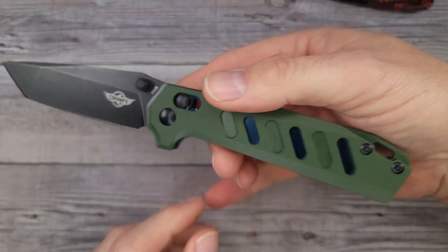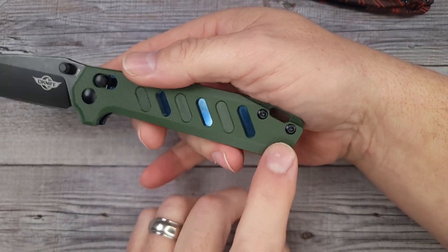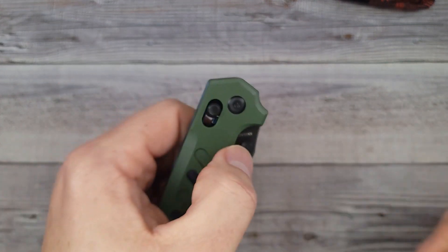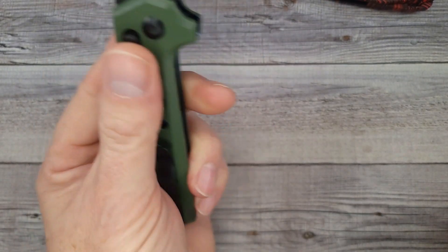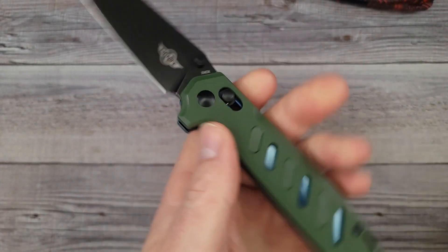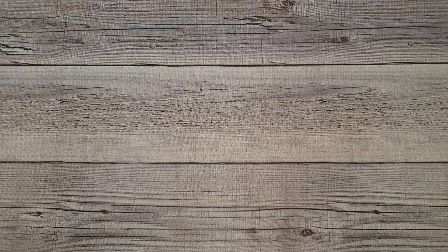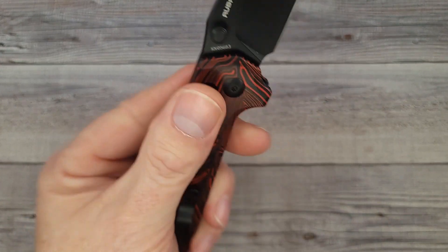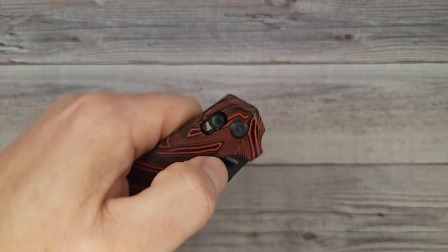Then you have a big lanyard hole back here. It is an ambidextrous knife, 100% ambidextrous besides the fact it doesn't have a reversible clip. So I guess maybe it's not completely ambidextrous without that reversible clip, but you can still use it with your left hand.